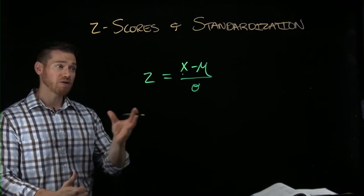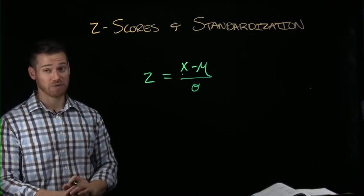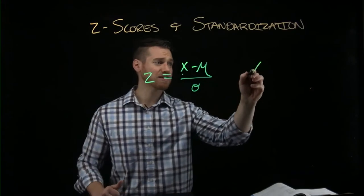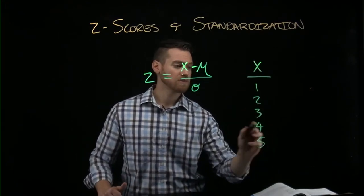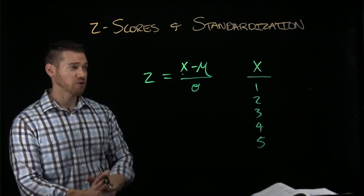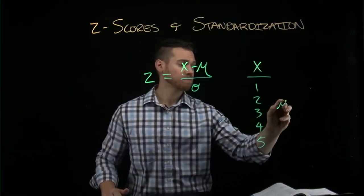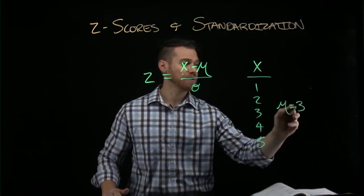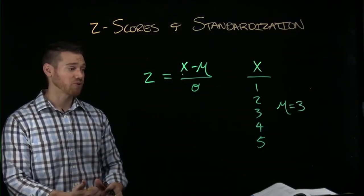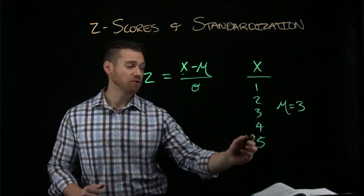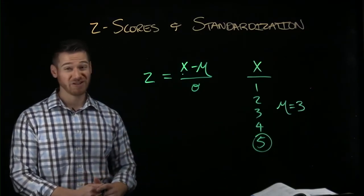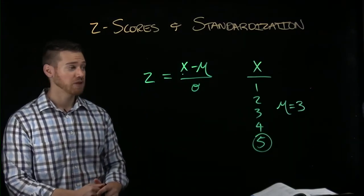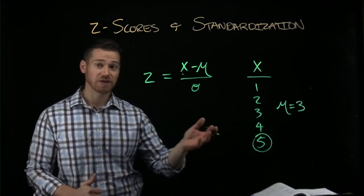So we can quickly obtain z-scores, and the nice thing is they're all comparable. So if we had a set of x-scores, and these five scores have a mean, assuming it's a population, of three, what is the z-score for the score five? Well, to do that, we need not only the mean, we need to again get a standard deviation. So what is the standard deviation for these set of scores?